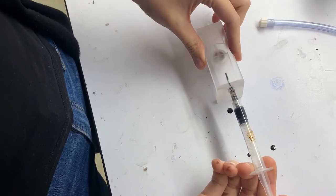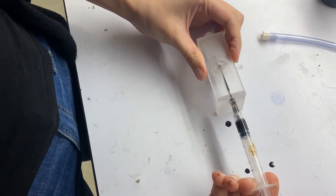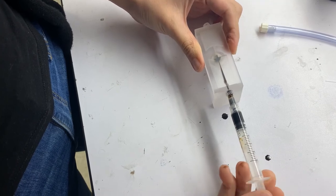Here I'm injecting the ferrofluid into the model using a syringe. You can see the magnet on the bottom is pulling the ferrofluid into the center, which is really neat.